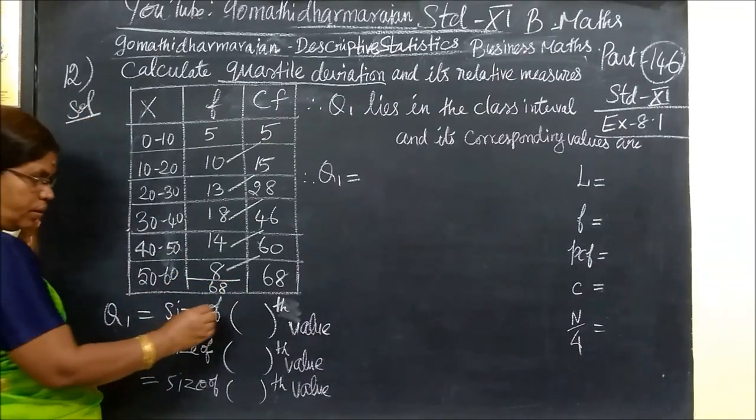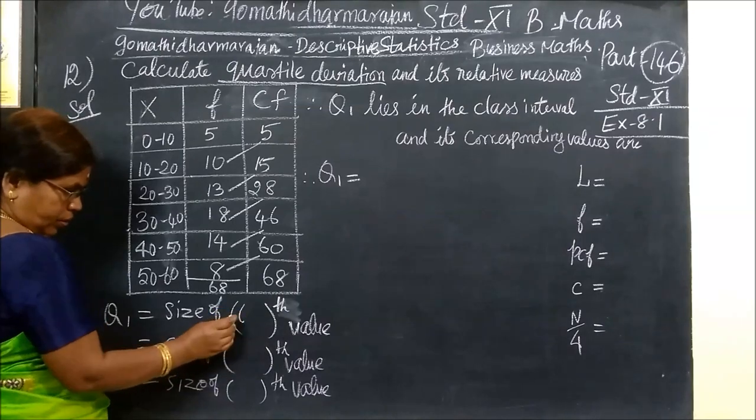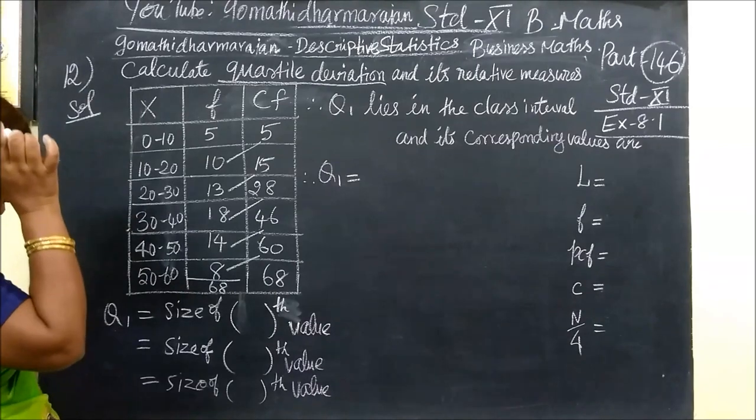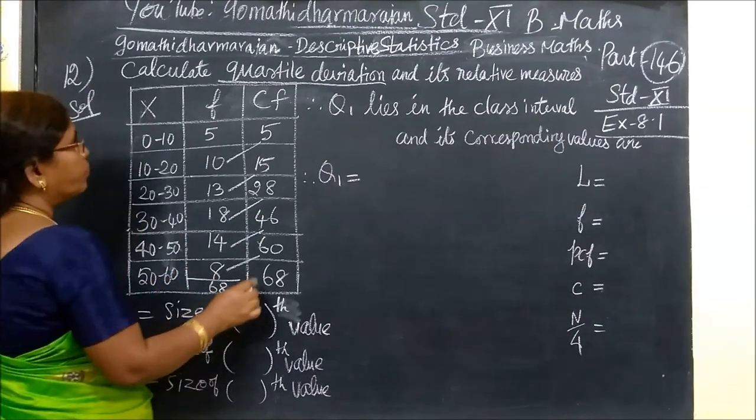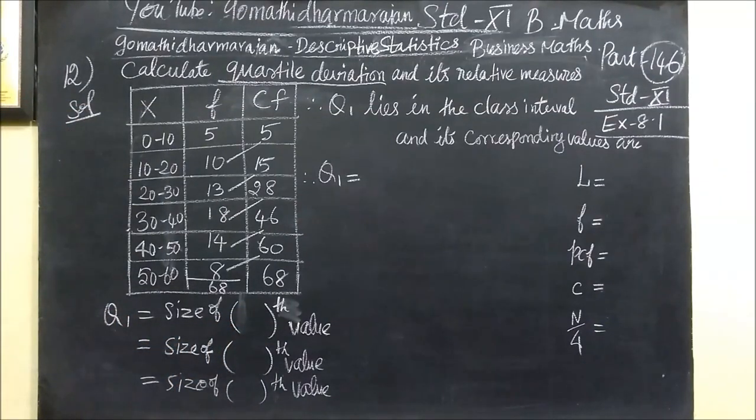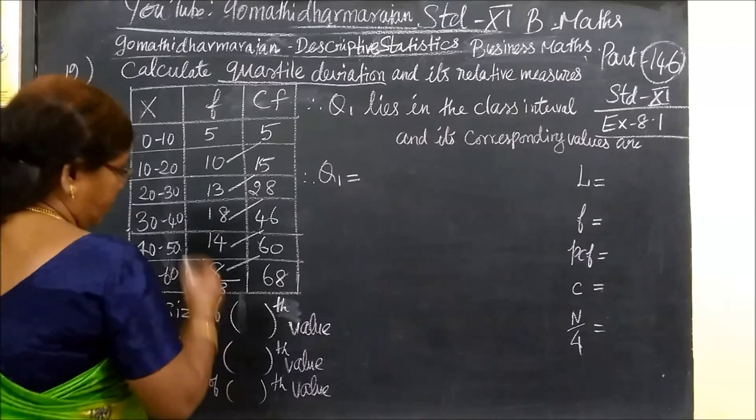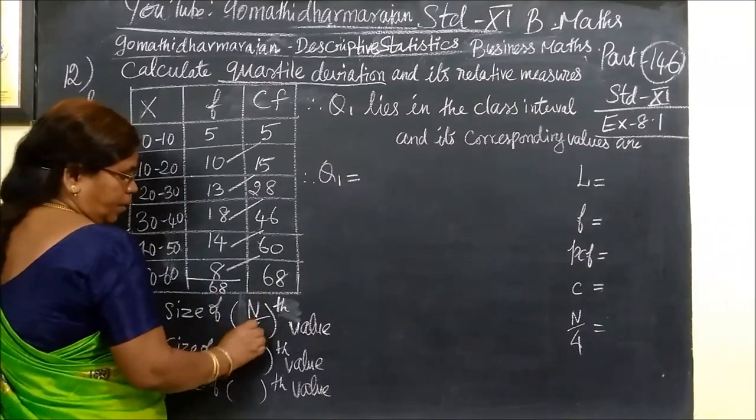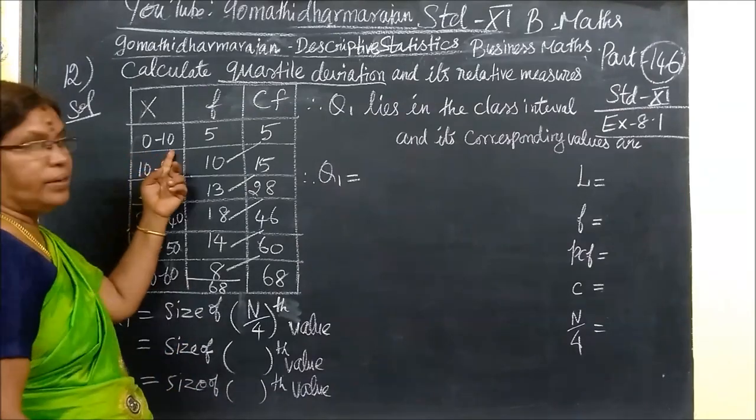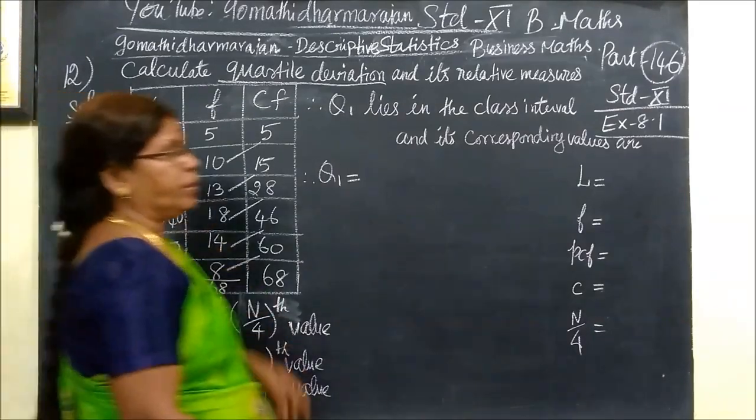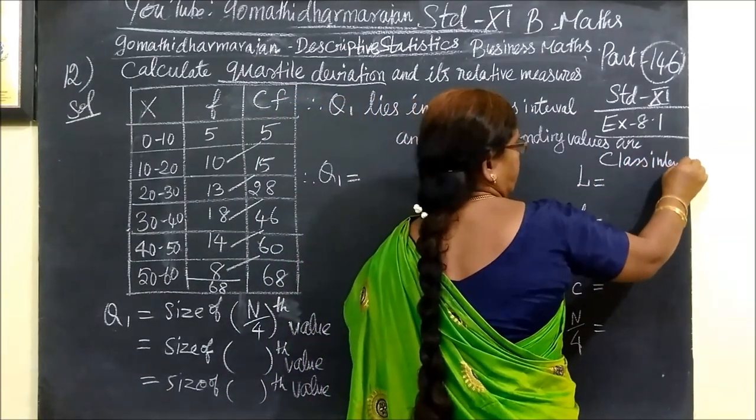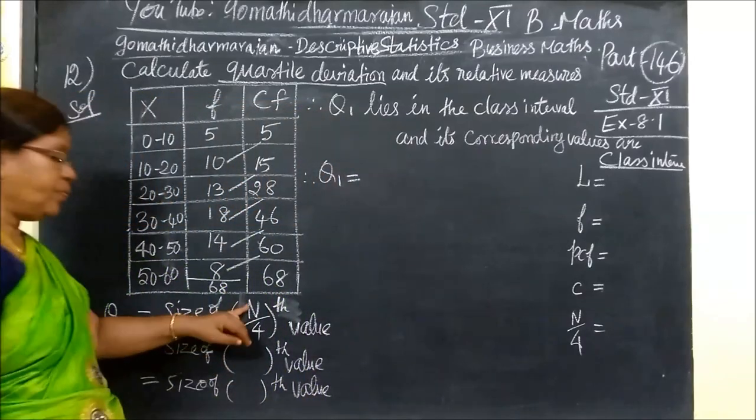Q1 is the size found using the formula n+1 by 4, where n is the frequency. When you find the class interval, please note that you are using n by 4.